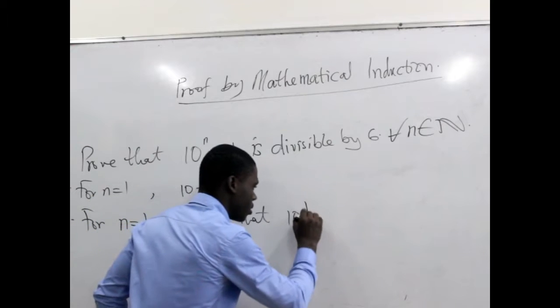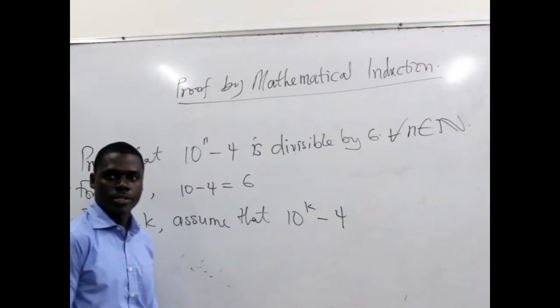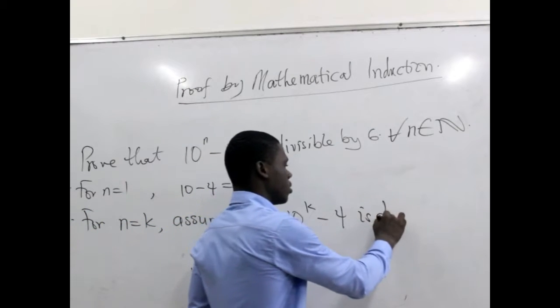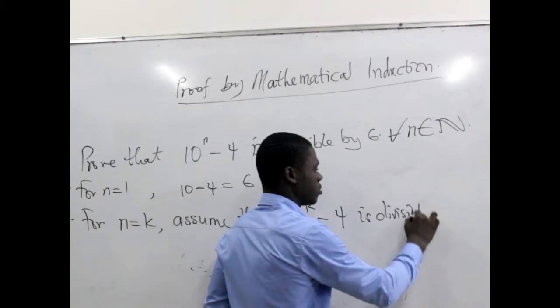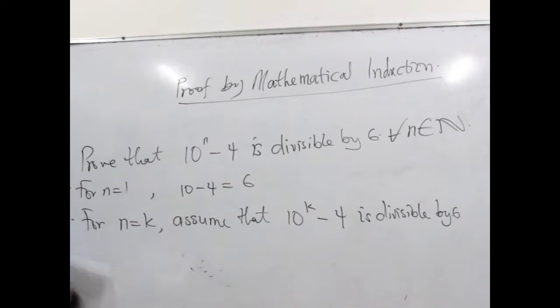So, 10 to the power k minus 4 is divisible by 6. Now, what do we mean by it being divisible by 6?